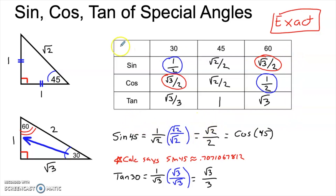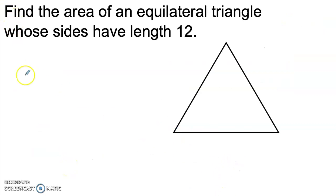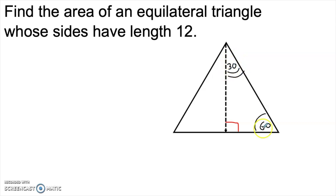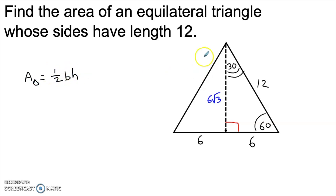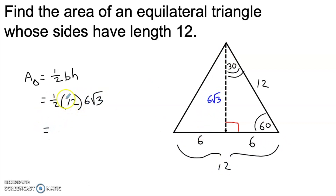First, a simple application: we have an equilateral triangle with sides of length 12, and we want to find its area. Drop an altitude into the triangle, which splits it into two 30-60-90 triangles. The original angles of 60 remain, and the top angles become 30. Since the original sides were 12, the base of each half is 6. Across from the 30 is 6, so the hypotenuse is 12, and the height is 6 times the square root of 3. Using the area formula — one half times base times height — we get an area of 36 times the square root of 3.